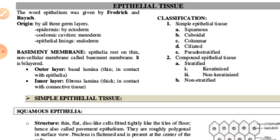Epithelial tissues exist in different structures. They may be simple squamous, cuboidal, columnar, ciliated, and pseudostratified. Compound epithelial tissues are also found — that is, stratified keratinized, non-keratinized, and non-stratified. There are different types of these tissues, and we have to discuss all of them.